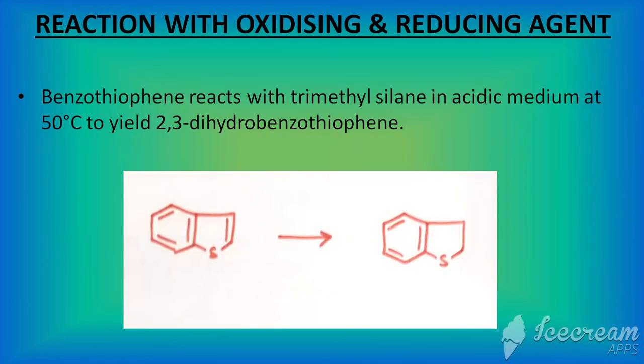A simple dihydrobenzothiophene is obtained at 50 degrees centigrade when benzothiophene reacts with organosilicon compounds.